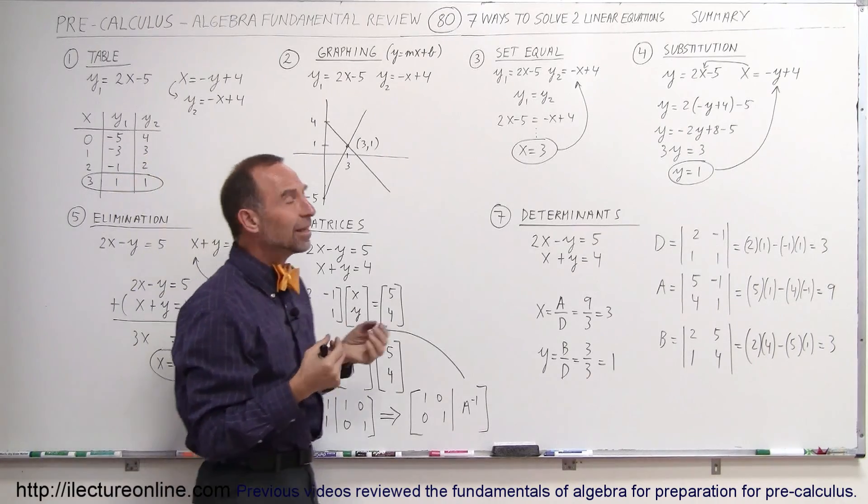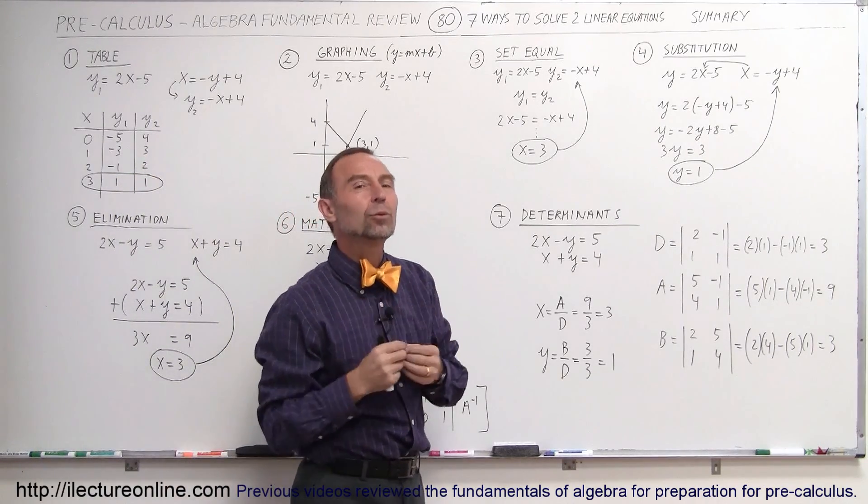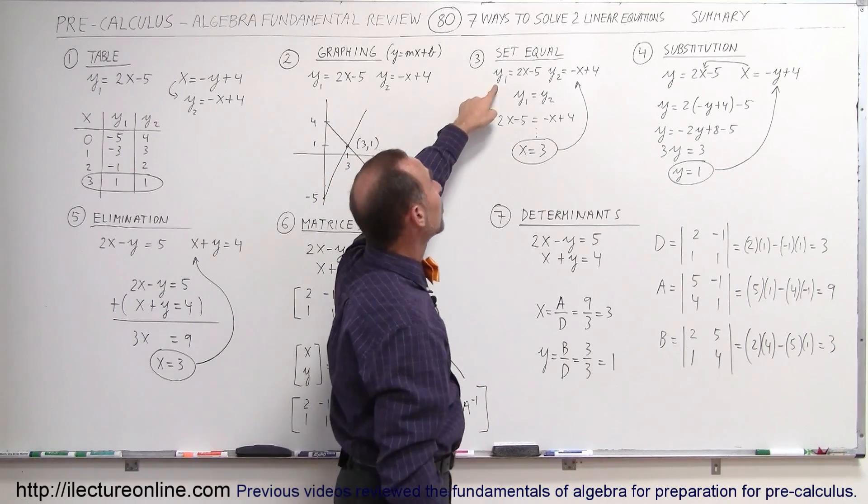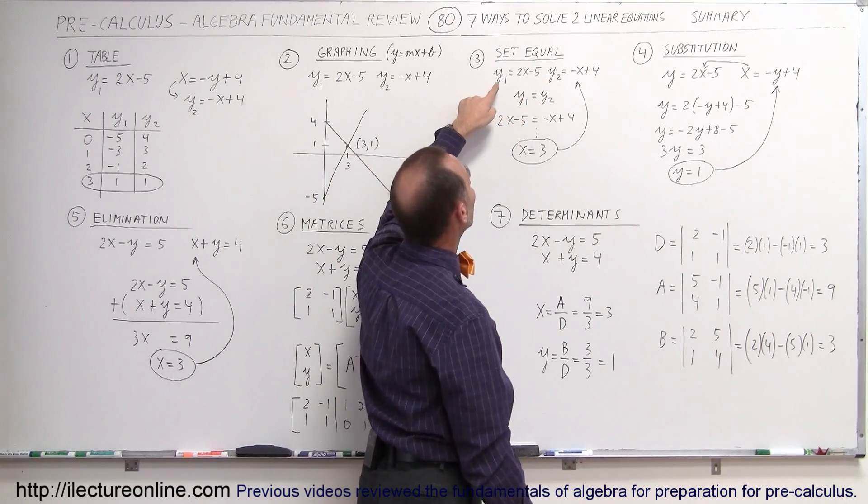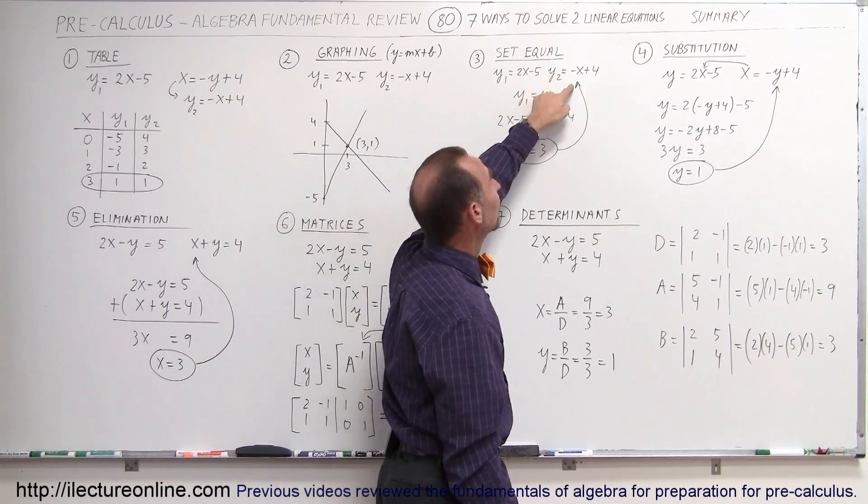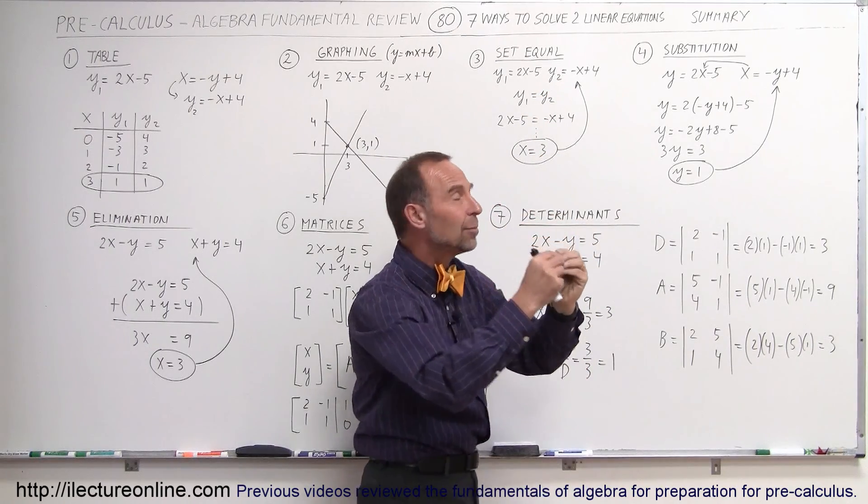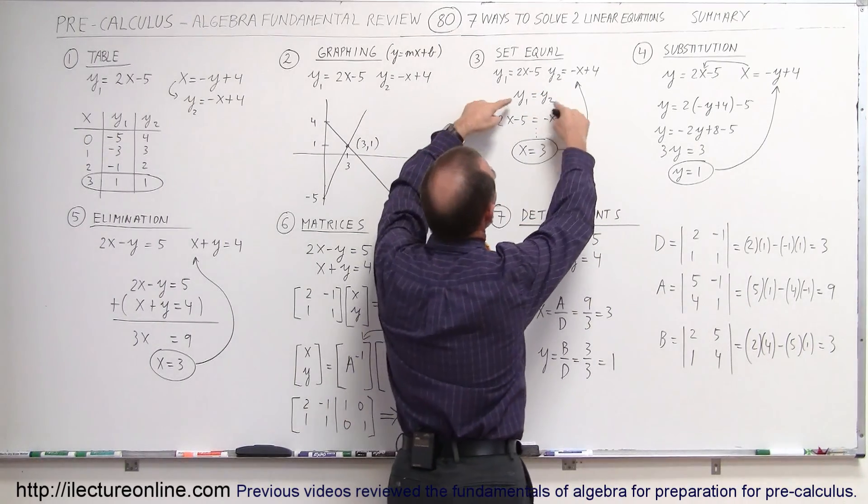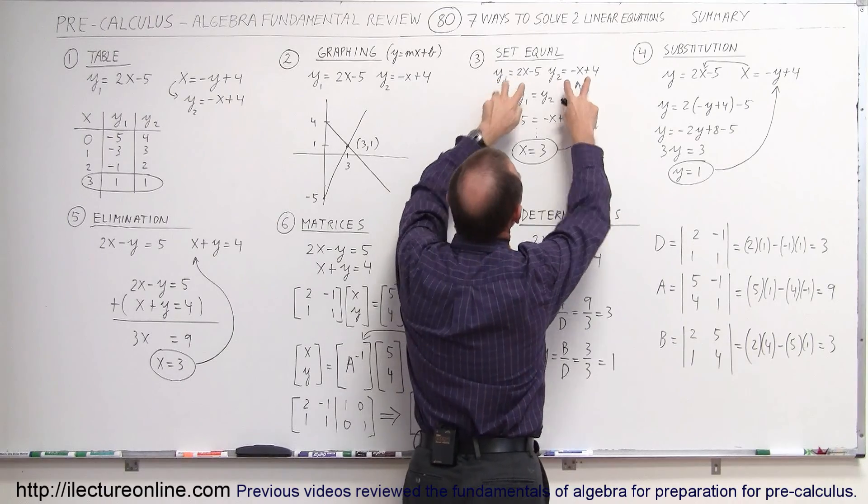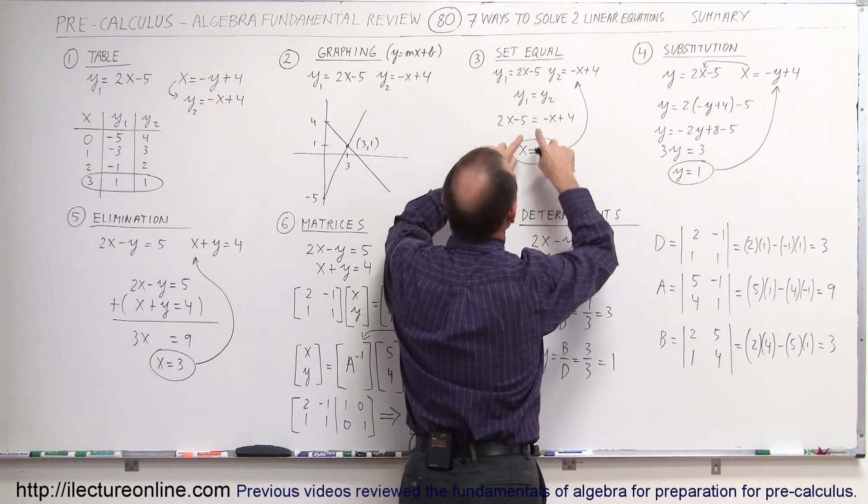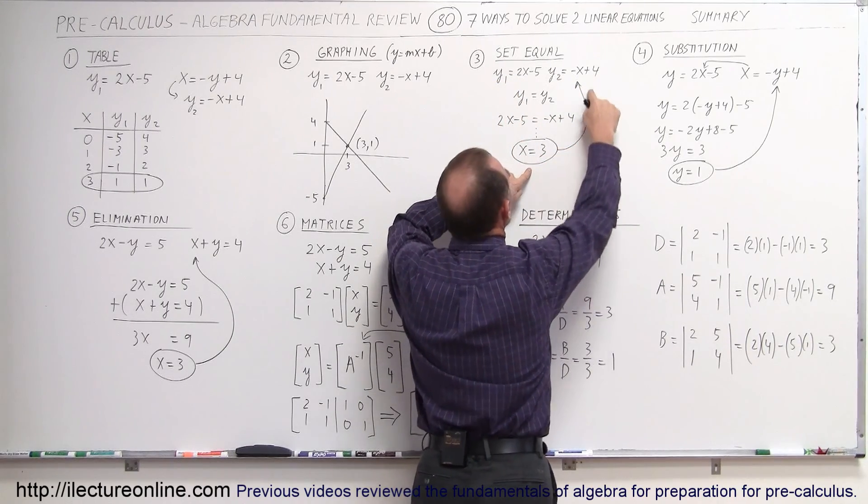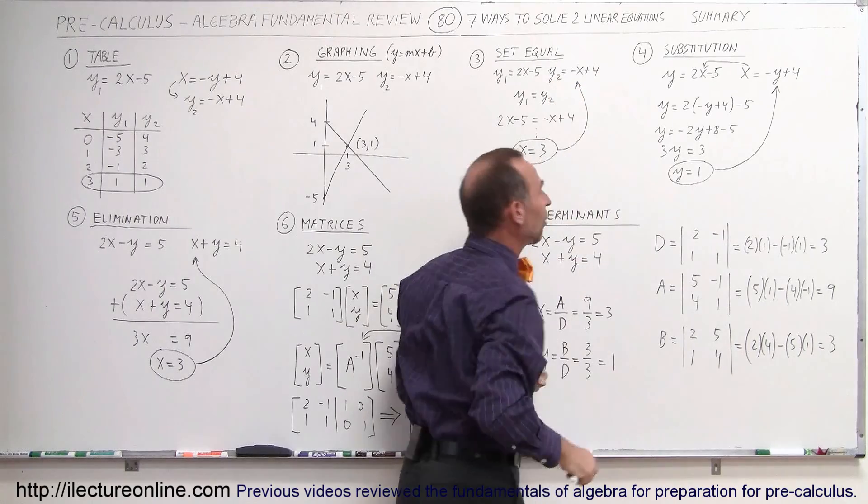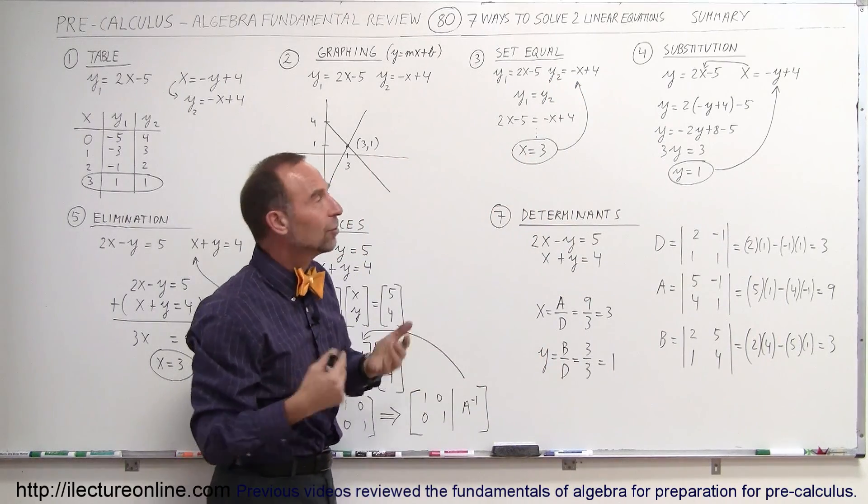The third method is taking the two equations and simply setting them equal to each other. To do that, you have to write them both in this format, and then since y1 equals this and y2 equals that, where the y values are the same, you can then solve for x. So set the two y values equal, so that means you can set the two right side of the equations equal to each other, solve for x, then plug that x back into one of the two equations to solve for y. When you do that, you get the right answer.